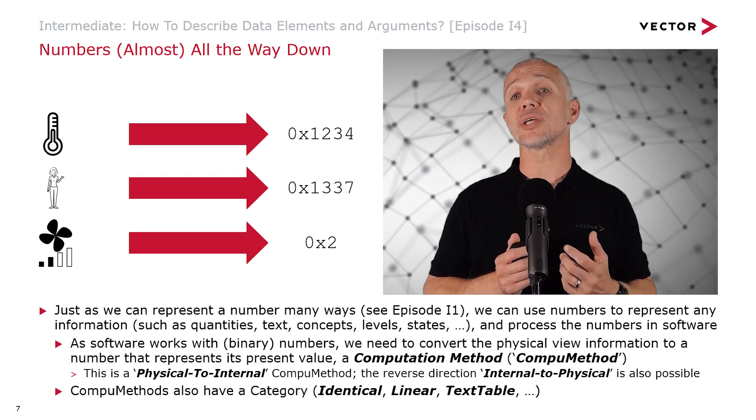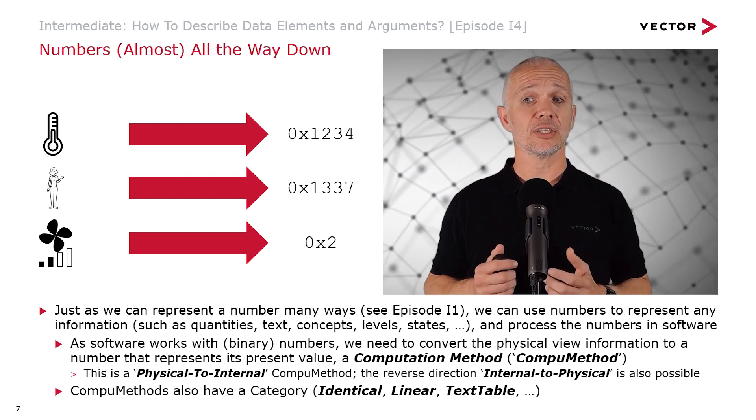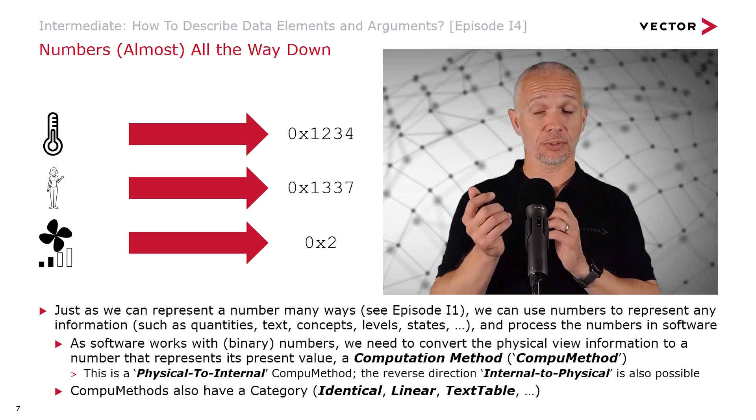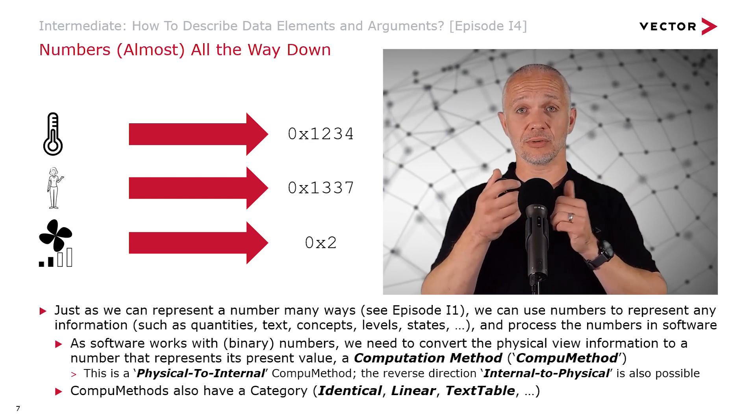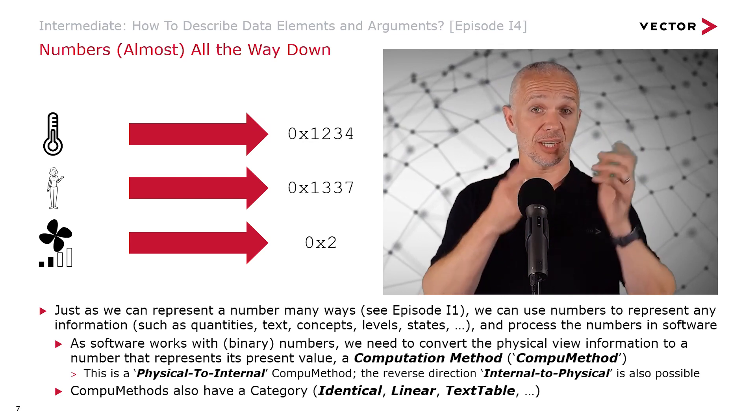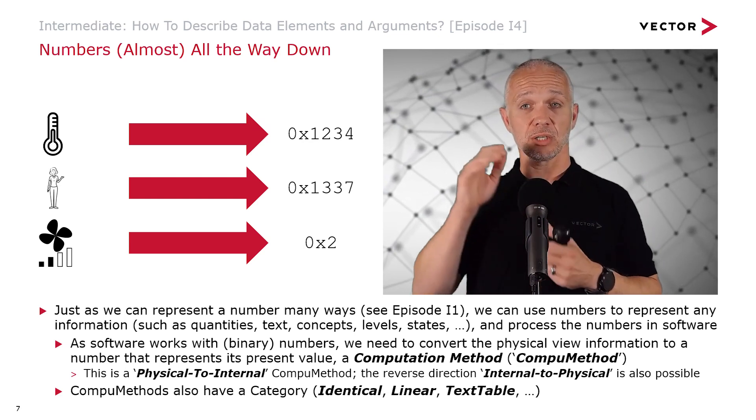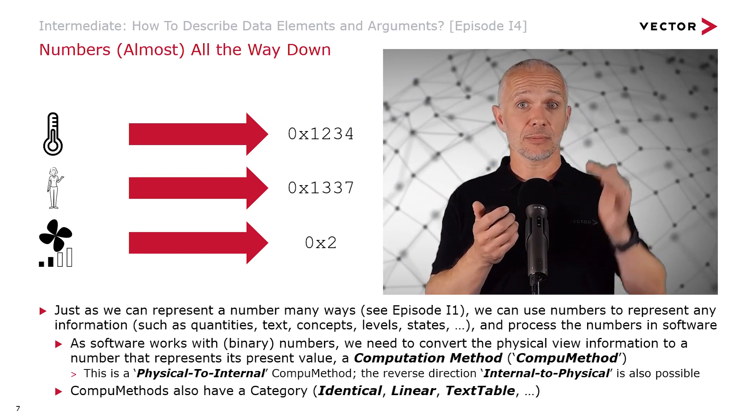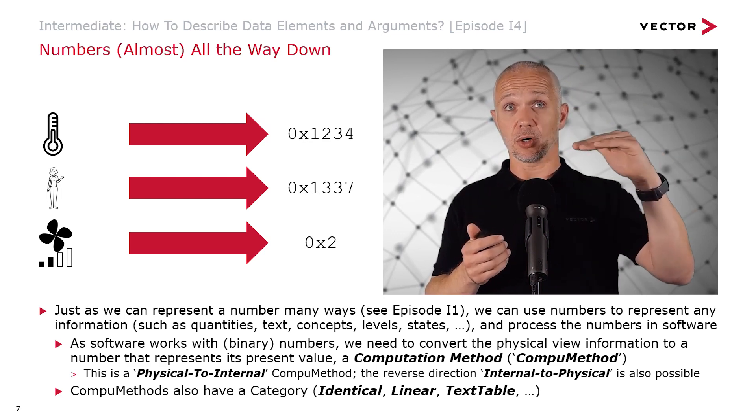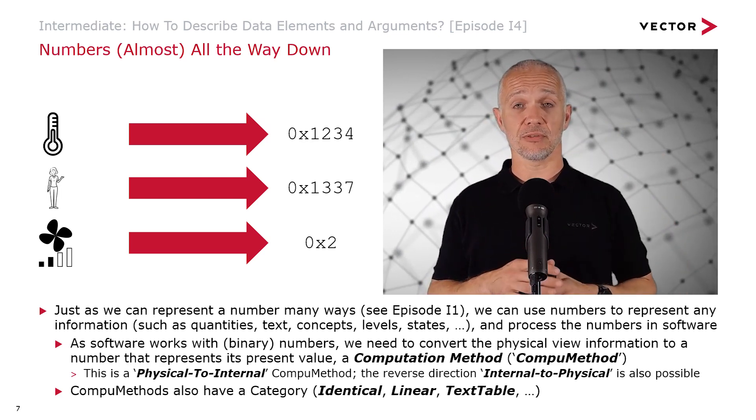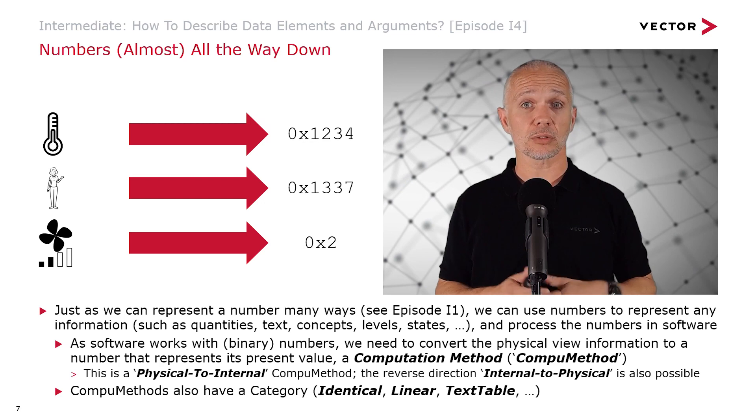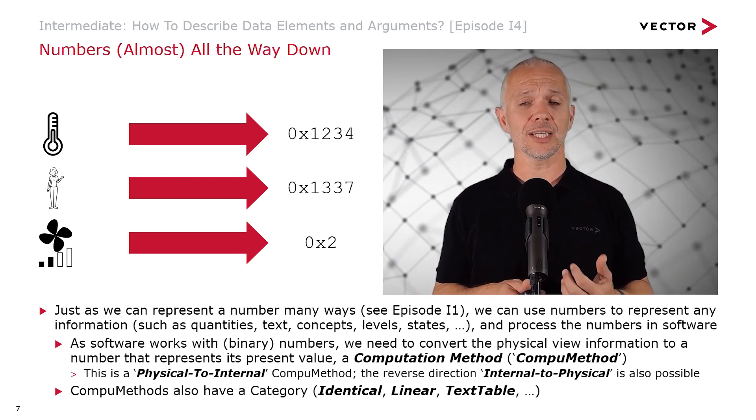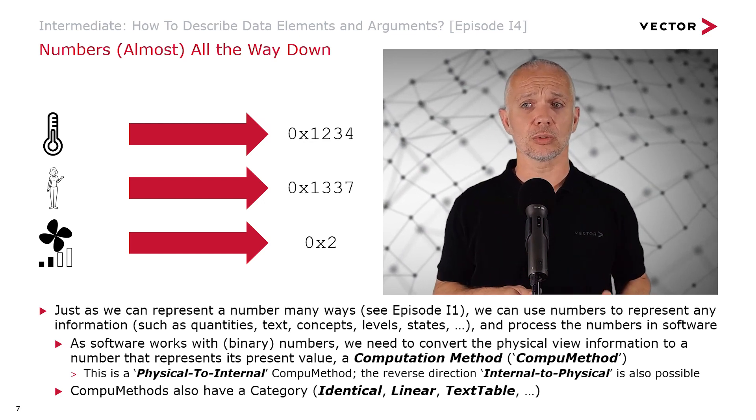CompuMethods also have a category such as identical, which we would use if we were maybe counting objects and we want to use the same number in software as the number of things that we've counted. Linear, so how a voltage corresponds maybe to a temperature. A text table, so things like on and off states, or if we've got a multi-position switch, a number that corresponds to the different switch positions. And other CompuMethods are also possible.